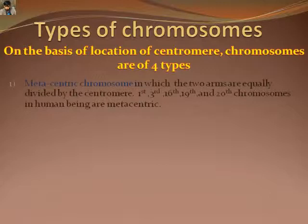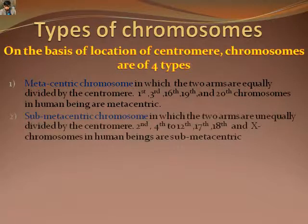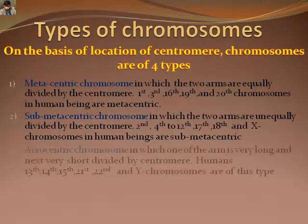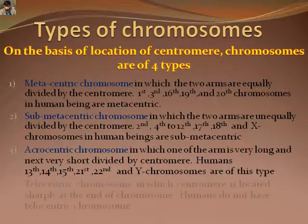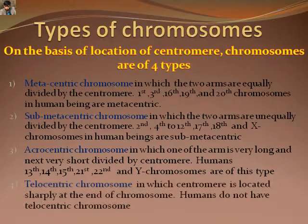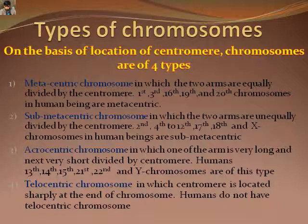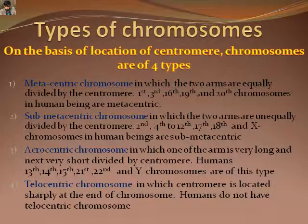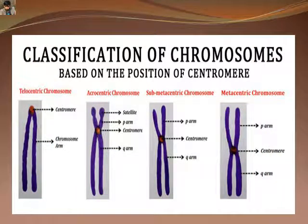With differential location of the centromere, chromosomes are of four types. Metacentric chromosomes are those in which the centromere divides the chromosome into two equal sections. Submetacentric chromosomes are divided by the centromere into two unequal sections. In acrocentric chromosomes, one section from the centromere is very long whereas the other is very short. In telocentric chromosomes, the centromere is located at the tip. The following image shows the structure of chromosomes having the centromere at different positions.